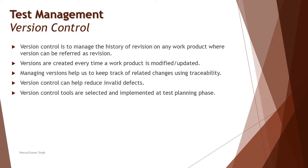Today we are referring especially to testing work products created as part of our life cycle, but it is not limited to that. There are several work products in the entire software development life cycle, and everything has to be managed through version control. A version is basically a modification or revision done on any work product. For instance, if I have written a particular requirement and provided all the necessary details for it, I call it version 1.0.